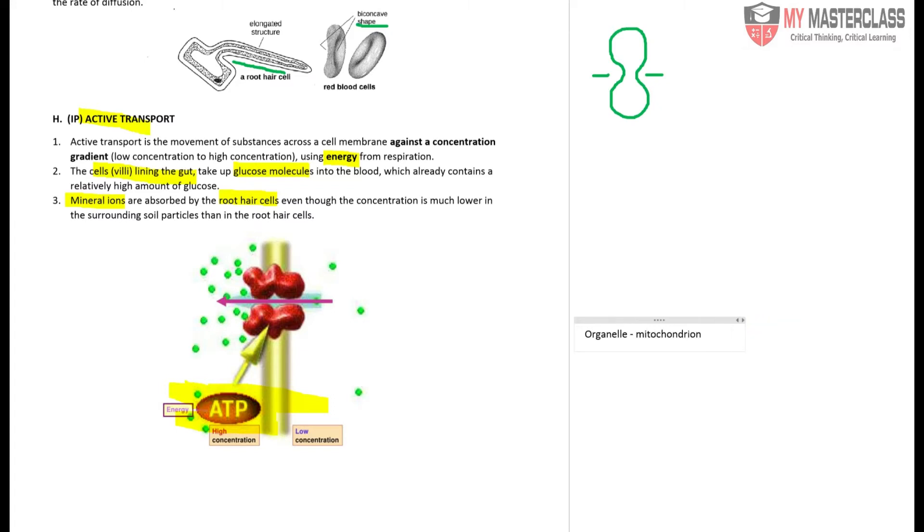Mitochondrion is the term for singular, whereas if you are talking about multiple mitochondrion, it will be mitochondria, which is plural. Cells that require a large amount of energy will have multiple mitochondria simply because they require a lot more energy.